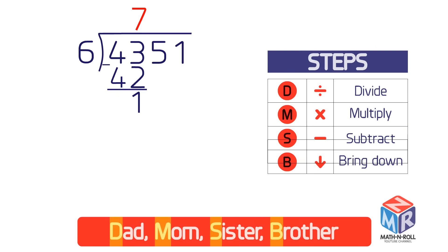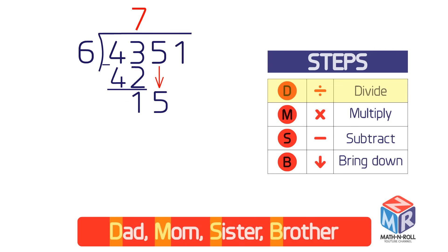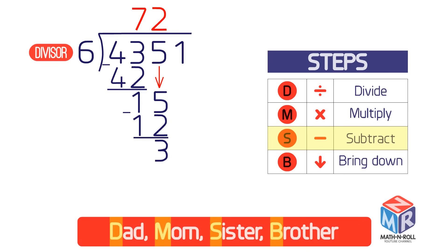Bring down the next number, 5, to make the new number 15. Now ask how many times 6 goes into 15 — that is, what's 15 divided by 6? The answer is 2 with a remainder, so write 2 above the 5. Multiply 6 by 2 to get 12 and write the product under 15. Subtract 12 from 15 to get 3. The result is less than the divisor, so it's okay.